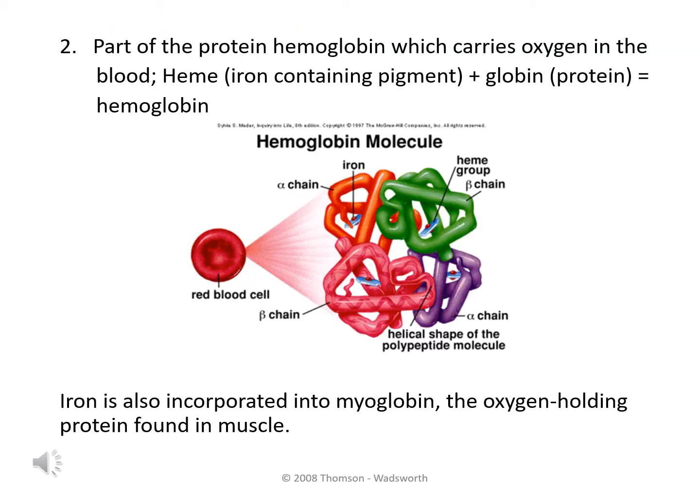Another important function of iron is its part in the hemoglobin molecule. Eighty percent of iron in the body is found in hemoglobin, which is the protein necessary to carry oxygen throughout our bloodstream to cells and tissues. Heme is the iron-containing pigment. The heme portion combines with the protein component, the globin, to form the intact hemoglobin molecule. Iron is also incorporated into myoglobin, which provides oxygen specifically to the muscles.